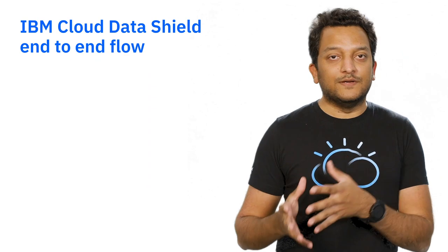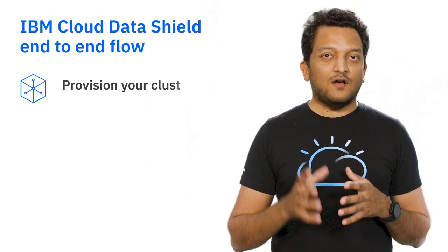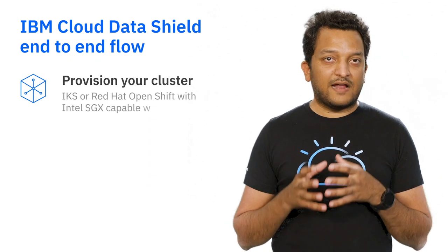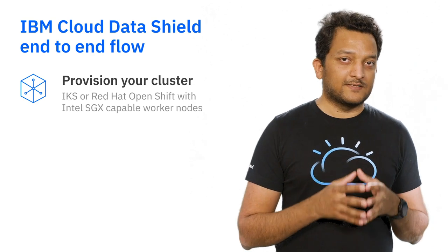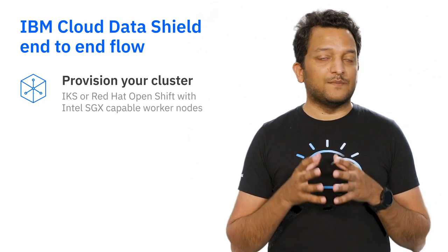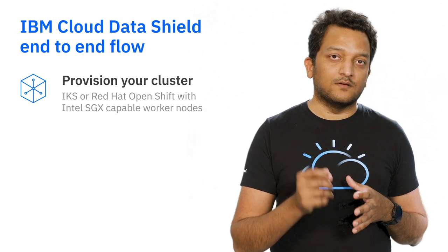So, where do you begin? First, you start with a Kubernetes cluster. You can provision either an IBM Kubernetes Service or Red Hat OpenShift on IBM Cloud cluster with Intel SGX-capable worker nodes.